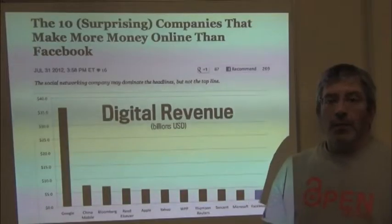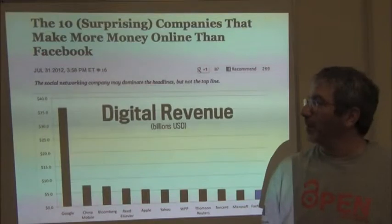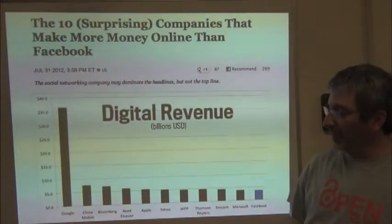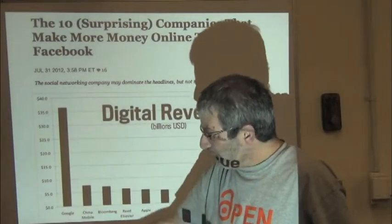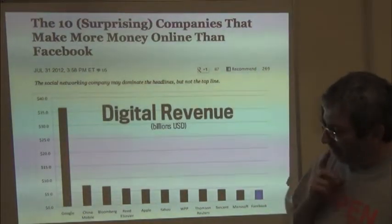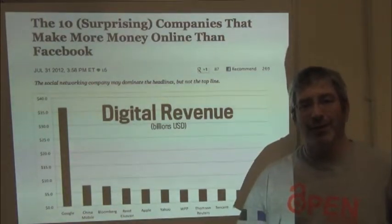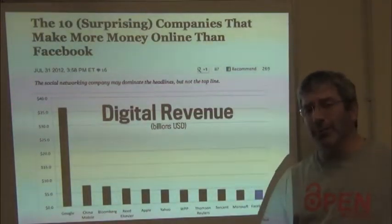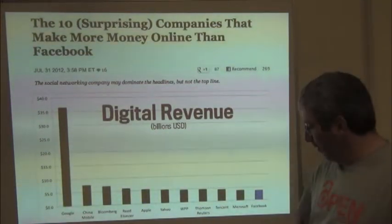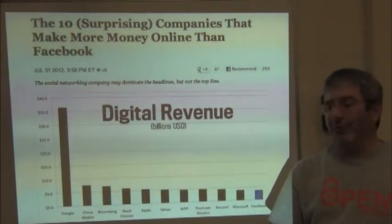This is a summary of the 10 companies that make more money online than Facebook — essentially how much money is being made by internet-based businesses. Obviously the big winner is Google. But I want you to notice that number four on the list is Elsevier, one of the big commercial publishers — and also one of the big commercial publishers that has the worst policies as far as access to what it publishes. Also in here is Thomson Reuters, which also makes a lot of money off of academic publishing.